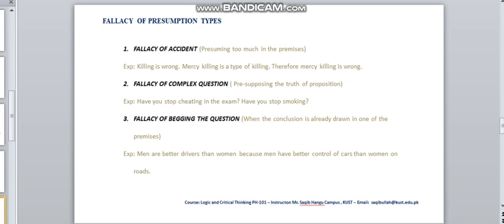Similar is the case with smoking, that you have never smoked, but when a person asks you in a way, have you stopped smoking? It means that you have been smoking in the past, or you are smoking now. In such fallacy, a complex question is asked by the interviewer or by someone, and that question basically presupposes the truth of the proposition.